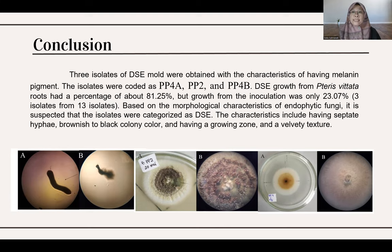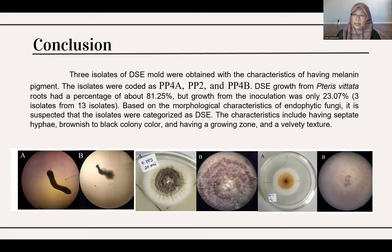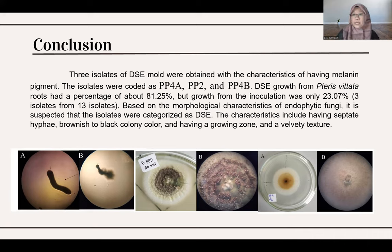In conclusion, only 23.7% of candidates were confirmed as Dark Septa Endophyte. It is very difficult to find DSE because they are very dependent on their host plant. We need to determine the exact media for identification. The characteristics of DSE include having septa, brownish to black coloration, a growing zone, and velvety texture.